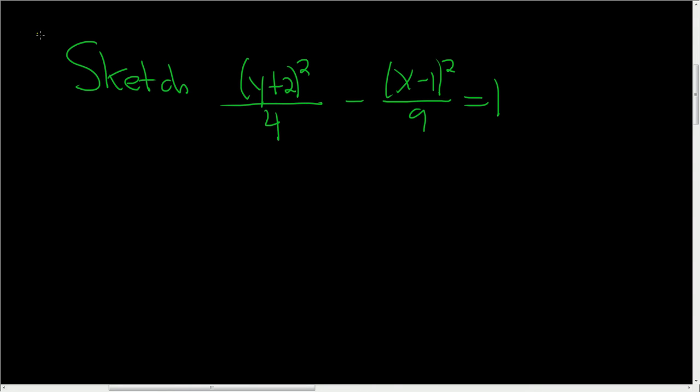We have an equation and we're being asked to sketch the graph of this equation. We have a minus sign here, and this looks to be what's called a hyperbola. If you had a plus sign here, this would be an ellipse.